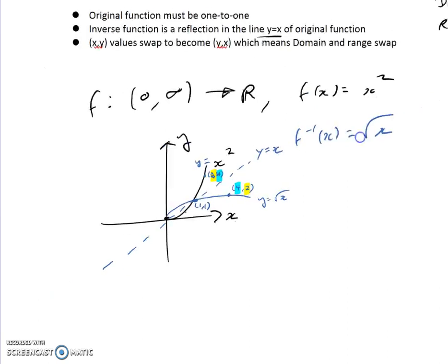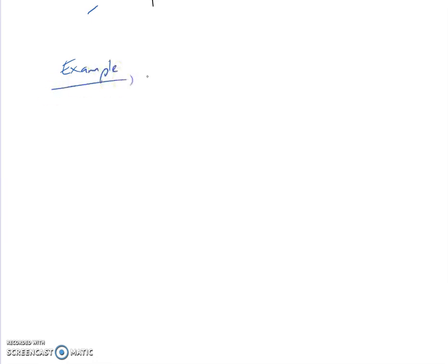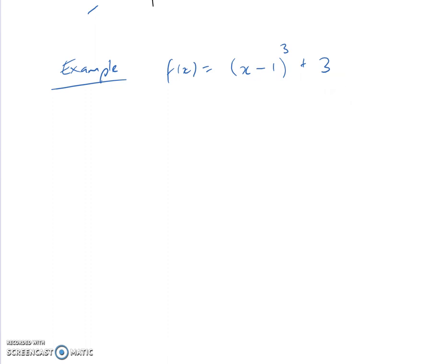There's a process for finding inverse functions, and we use that idea of things swapping around. We'll do another example with a cubic. Say I had a cubic in my sort of normal point-of-inflection form, and I restrict my domain — oh, cubics don't need restricted domains because they're one-to-one anyway.